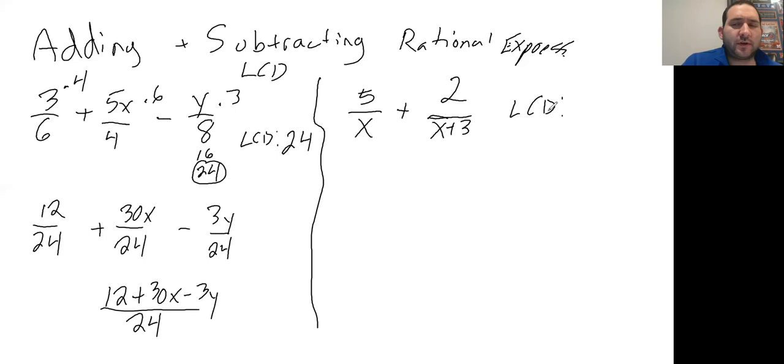The LCD? Well, there's no factoring involved. Since these are both different and there's no factoring, the LCD is actually just the two denominators put next to each other. Whenever you have a situation like this where there's no factoring and these are different, you can literally just make the denominator both of them together.